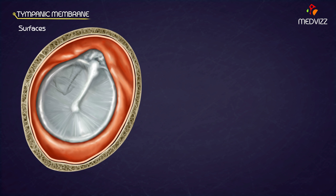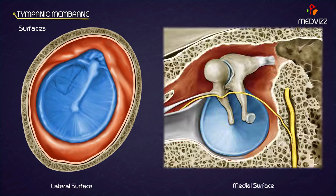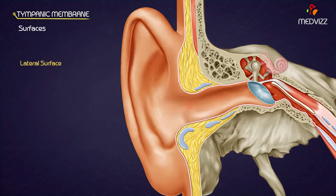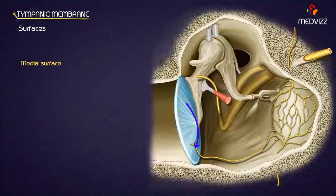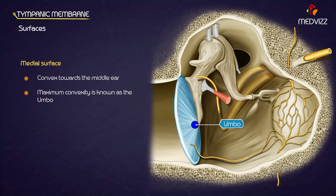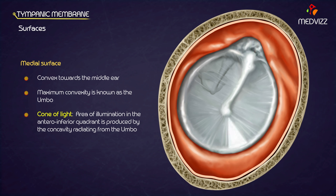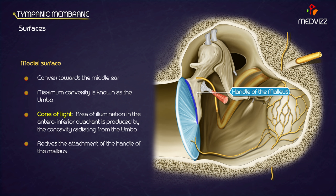Surfaces. The tympanic membrane presents with a lateral and medial surface. The lateral surface is concave towards the meatus and is directed downwards, forwards, and laterally. The medial surface is convex and bulges into the middle ear. The point of maximum convexity is known as the umbo. When the tympanic membrane is illuminated on inspection, the concavity of the membrane produces a cone of light radiating from the umbo over the antero-inferior quadrant. It receives the attachment of the handle of the malleus up to the center of the membrane.